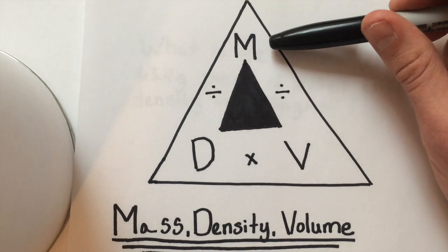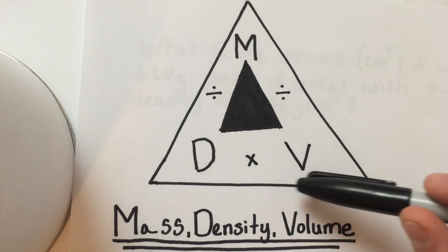So let me explain how this triangle works. If we're looking for mass, we're left with density times volume.